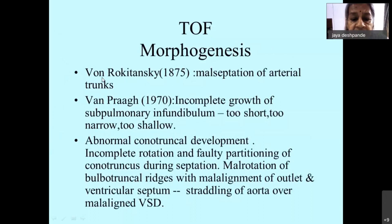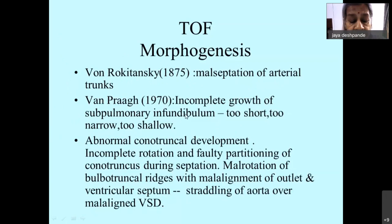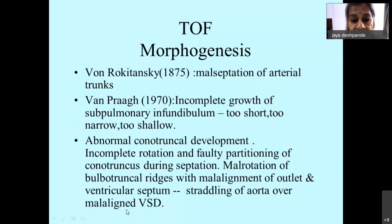Regarding the morphogenesis of Fallot's tetralogy, von Rokitansky in 1875 believed it was due to malposition of the truncus. In 1970, Van Praagh thought it was due to incomplete growth of the sub-pulmonary infundibulum — too short, narrow, or shallow. What is now believed is that it is abnormal conotruncal development: incomplete rotation and faulty partitioning of the conotruncus during separation, with malalignment of the outlet and ventricular septum causing the aorta to straddle the malaligned VSD.